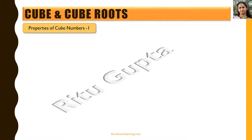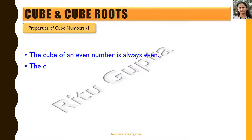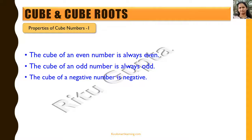Let's look at some properties of cube numbers. The cube of any even number is always even, because any even number has 2 as its factor, so its cube will always have 2 — and actually 8 — as its factor. Similarly, the cube of an odd number will always be odd. The cube of a negative number is negative, and the cube of a positive number will always be positive.